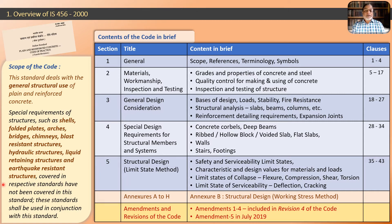In addition to the 5 sections, IS 456-2000 has annexures A to H — eight annexures. Particular attention should be drawn to Annexure B, which covers structural design by working stress method. The working stress method was the older method used prior to 1978, but IS 456-2000 still retains this annexure as a brief historical extract.